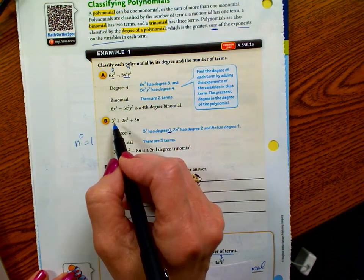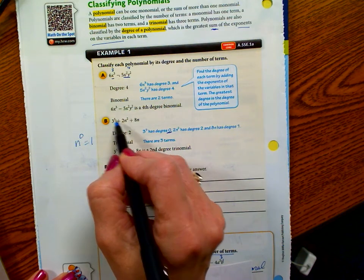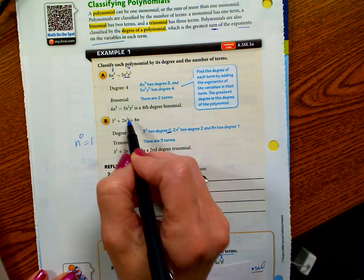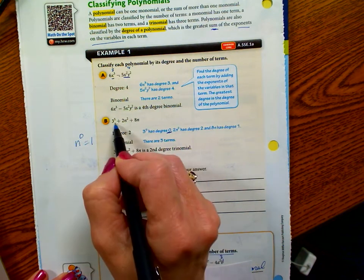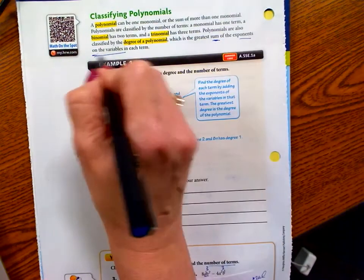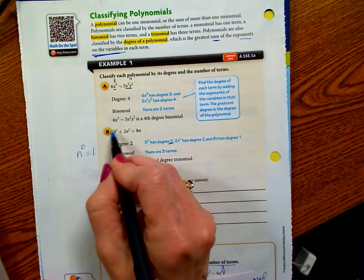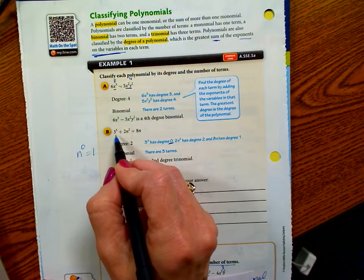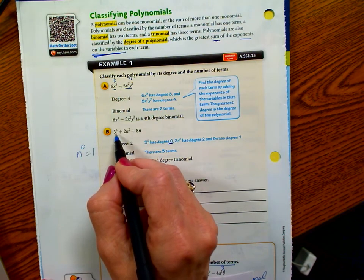Now let's watch the degrees. Be very careful. This is three to the fifth, plus two n squared, plus eight n. Well, don't just pull this exponent, because again, in the definition, it says the exponents on the variables. Is there any variable here? No, there's no variable.